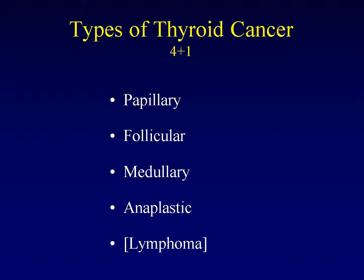The most common type is papillary, then follicular. Sometimes papillary and follicular are lumped together and called differentiated thyroid cancer, as they're treated in a similar way. There is medullary thyroid cancer, which arises from a different cell within the thyroid gland, and anaplastic or de-differentiated thyroid cancer, which is the most aggressive. Lymphoma is not actually cancer of thyroid cells, but it can affect the thyroid gland and needs to be on our differential.